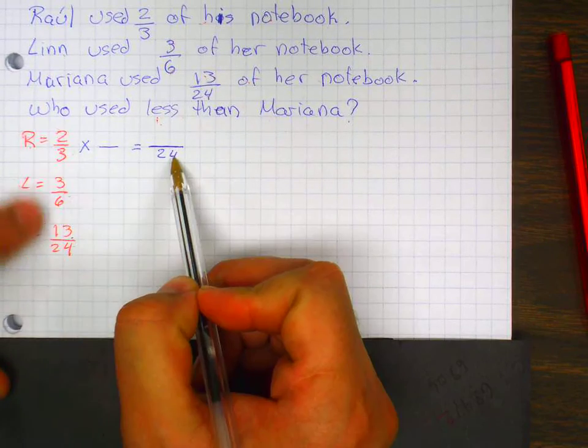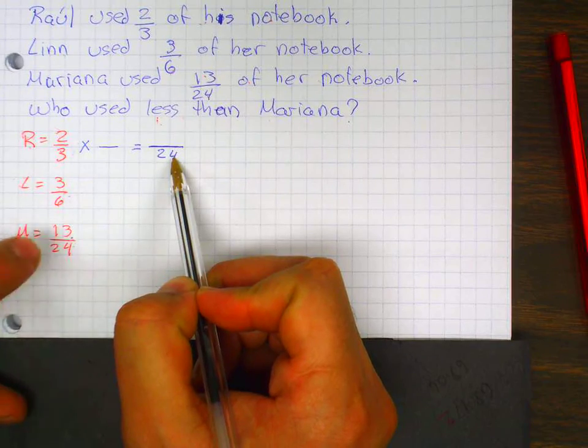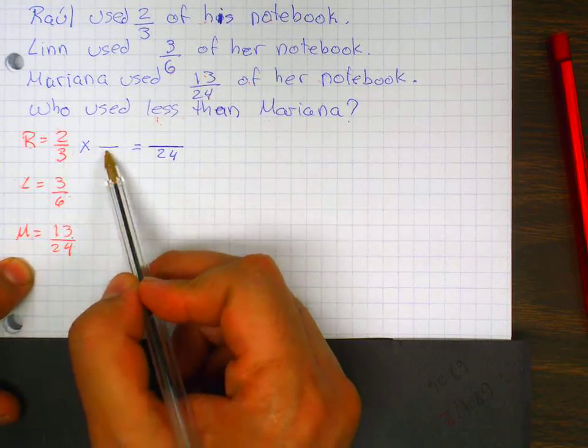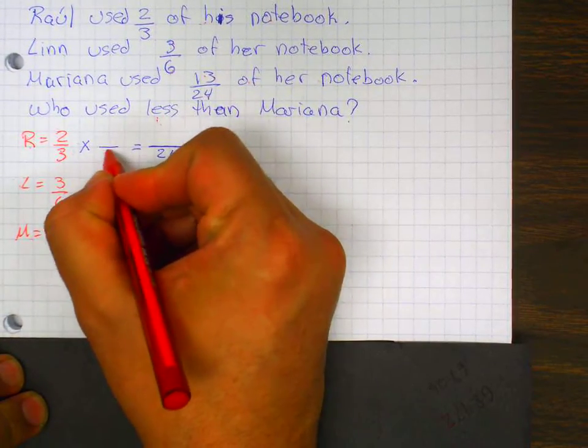An equivalent fraction that has a denominator of twenty-four so I can compare it with Mariana. So three times what number is twenty-four? Three times eight.